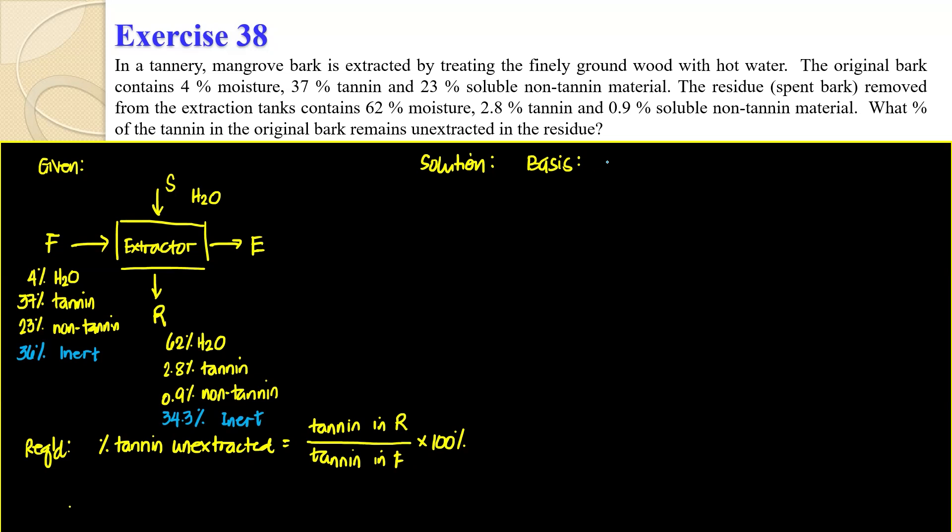So what would be a very good basis for us? The very good basis is 100 kilograms of feed. So let's do an OMB. The thing is you don't know how much S is, but you know it's F plus S is equal to E plus R. Your F is 100 plus S is equal to E plus R.